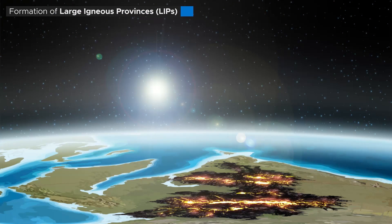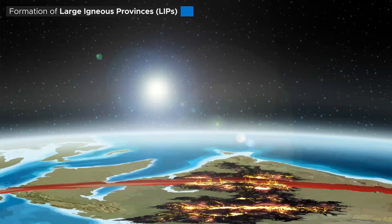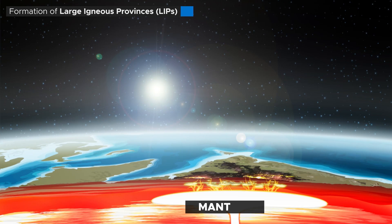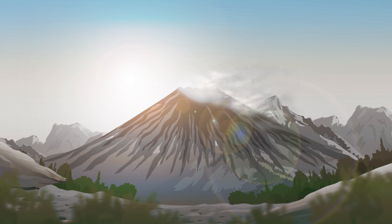The exact processes are of course still subject to heated debate, but the principal model for their origin, which is widely accepted today, is the so-called mantle plume model. Before we can discuss what exactly this is, however, we first have to understand how volcanoes are typically formed.